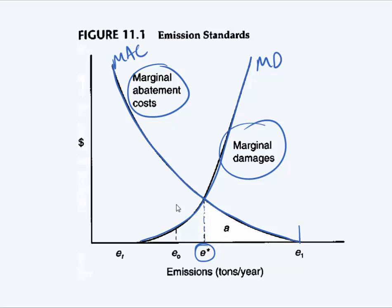We chose e* because we know that's the efficient level of emissions. The area shown by A would be the amount the company pays to comply with the standard — they have to decrease from e1 to e*, and that would cost a total abatement cost of area A. This graph shows how to get companies to e*, the efficient level of emissions, using emission standards. Make sure you understand that and are able to draw it.